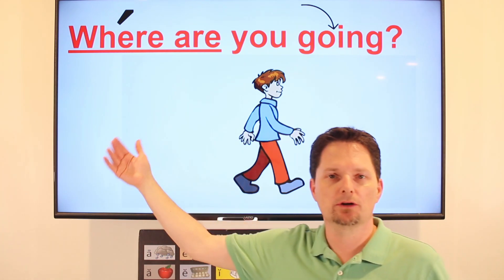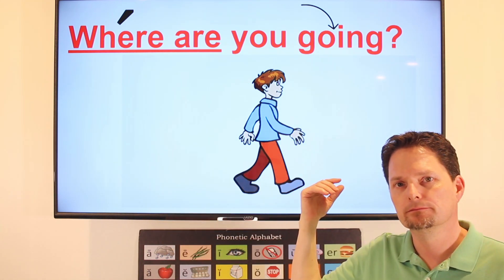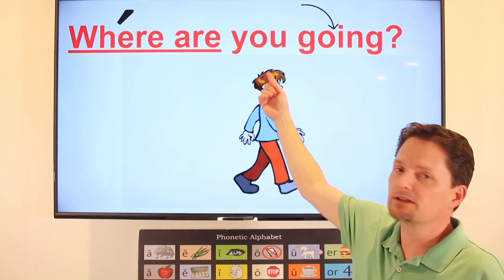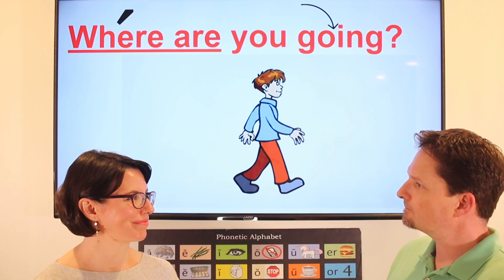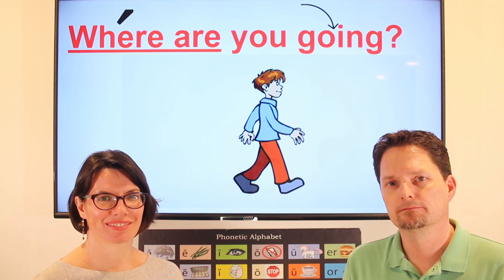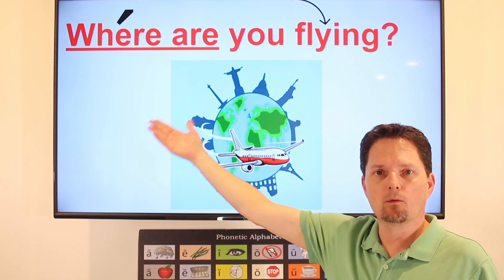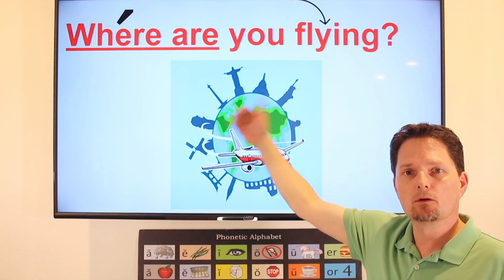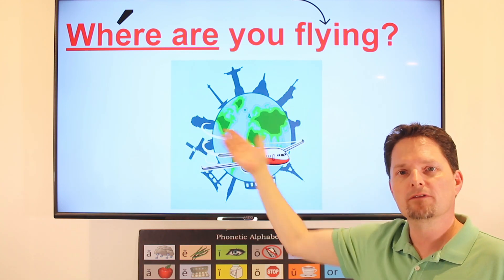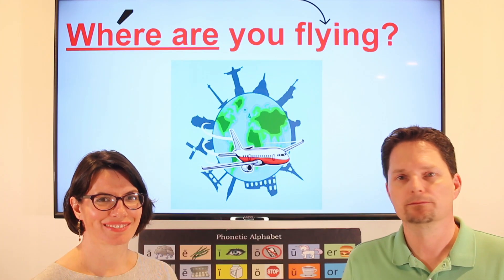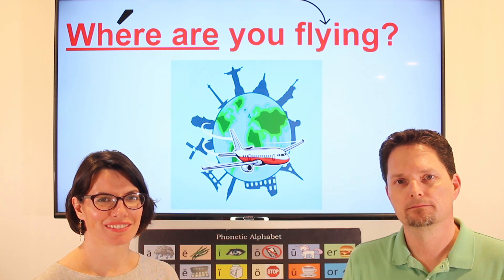Another question with 'where are': where are you going? Where are you going? You can pronounce the 'you' as 'you' or 'ya.' Where are you going? — I'm going home. Similar question: where are you flying? Where are you flying? You can say 'you' or 'ya.' Where are you flying? — I'm flying to Chicago.